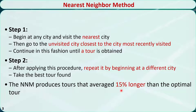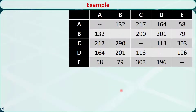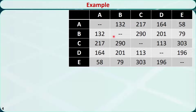Let's check an example with 5 cities: A, B, C, D, and E. We want to find the best sequence so that the total distance traveled will be minimized. Here is the distance or cost matrix.